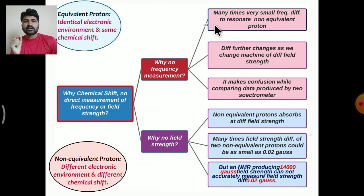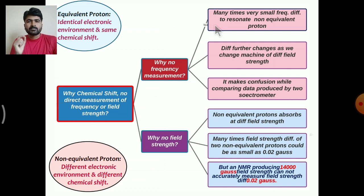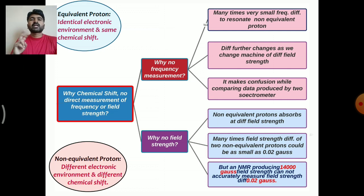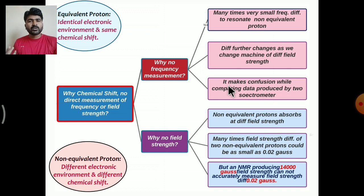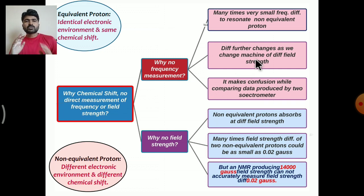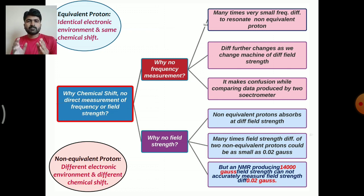The frequency difference required to resonate two non-equivalent protons is many times very small. As we change to machines of different field strengths — for example 600 MHz, 300 MHz, or 800 MHz — this difference further changes. Our machine's capacity is in megahertz but the frequency difference required for resonance is in hertz, and therefore we cannot develop an accurate scale, leading to inaccurate measurement.